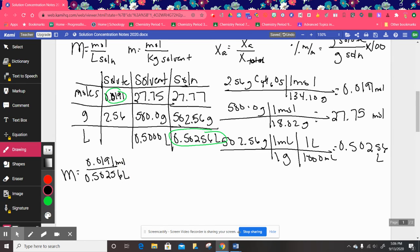So 0.0191 divided by 0.50256 liters. That's moles of solute per liters of solution. And when you do that, we should get 0.0380 molar C4H6O5. So that's the molarity.